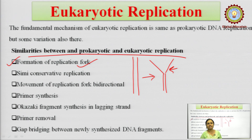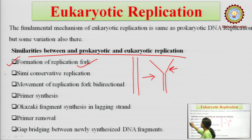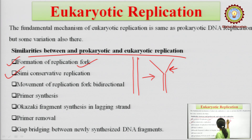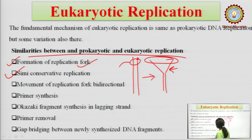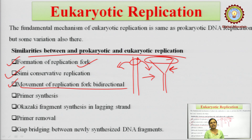The next similarity is semi-conservative replication. As I have explained in detail, the replication process is semi-conservative in nature in both prokaryotes and eukaryotes. The third point of similarity is the movement of the replication fork in a bi-directional manner — from the origin of replication, the fork moves in both directions in both cases.